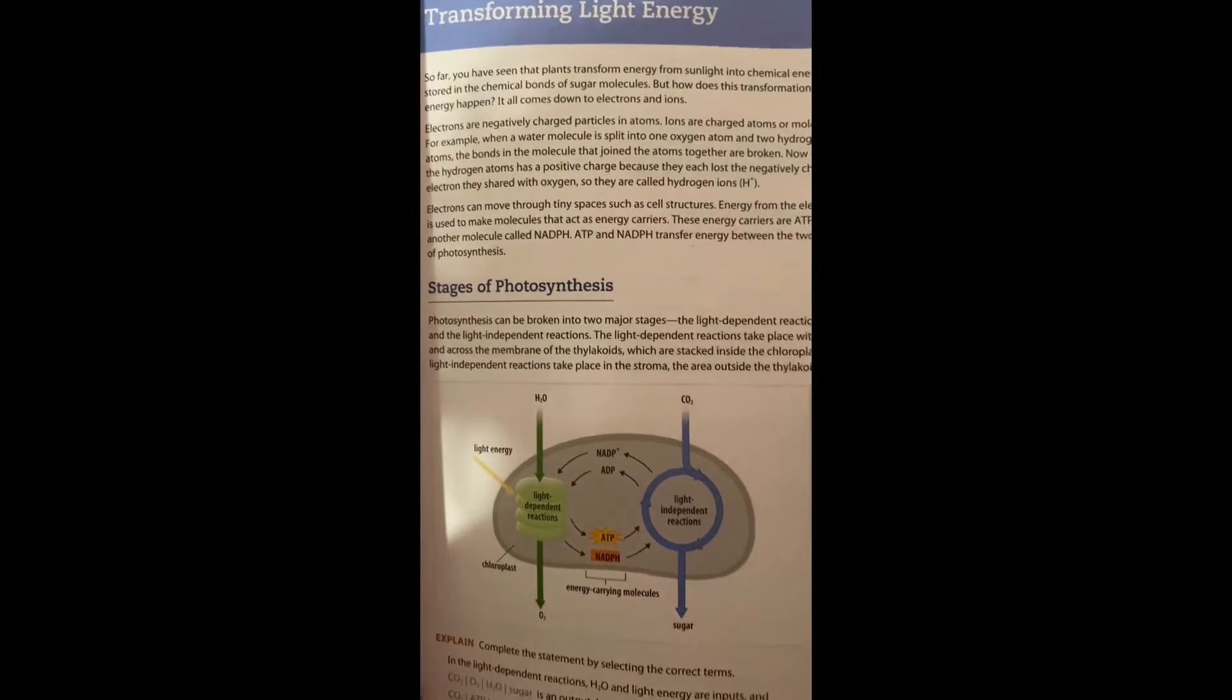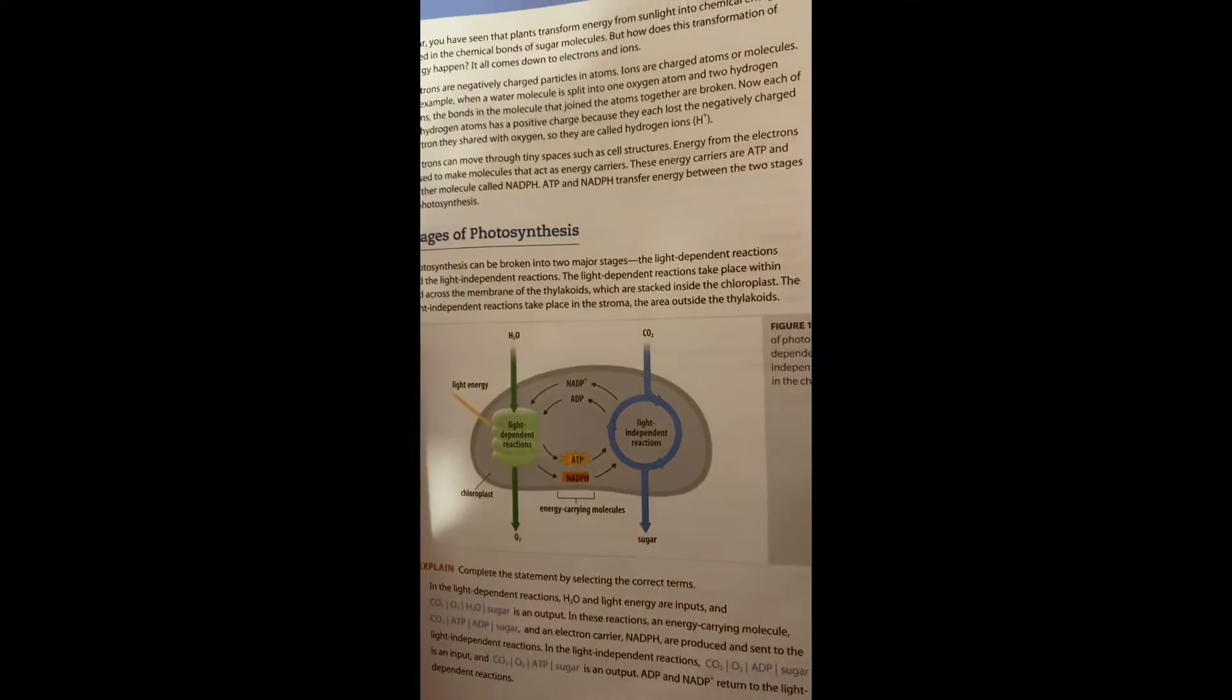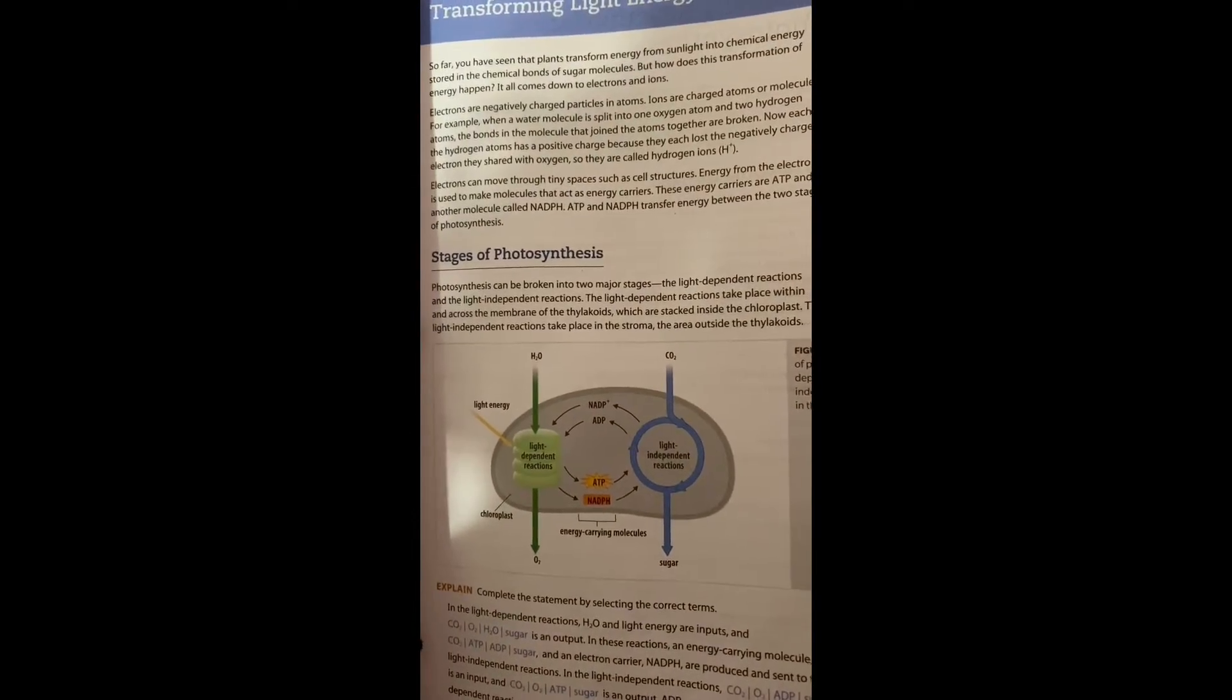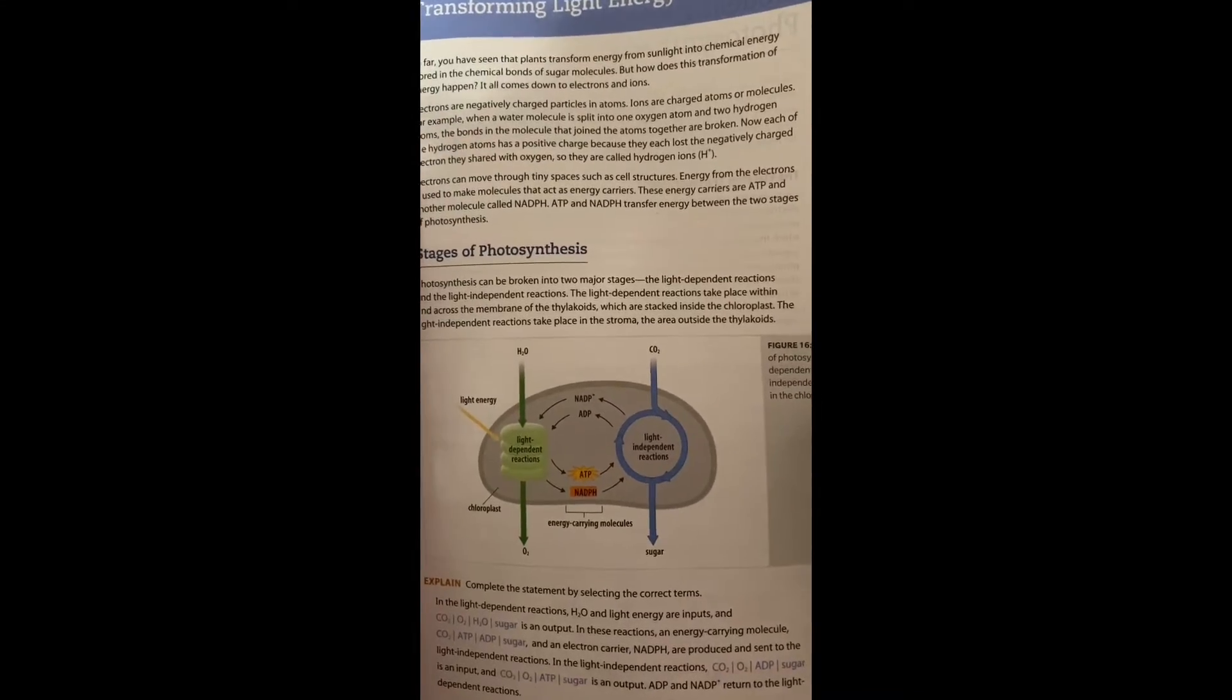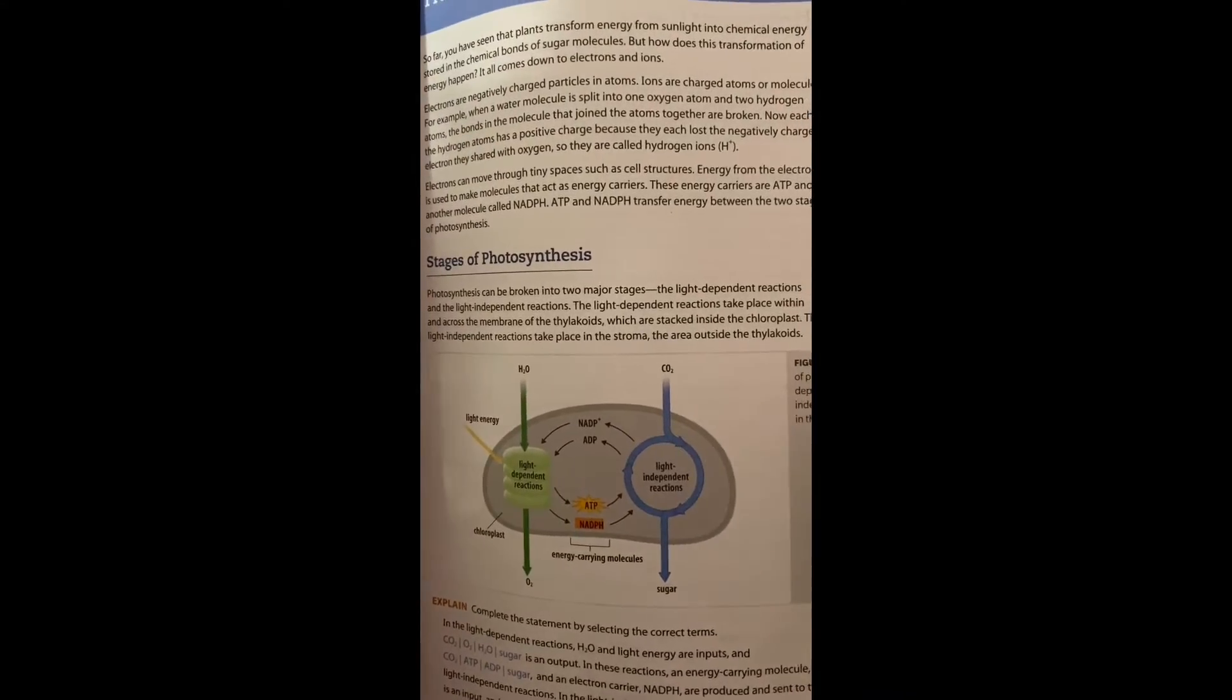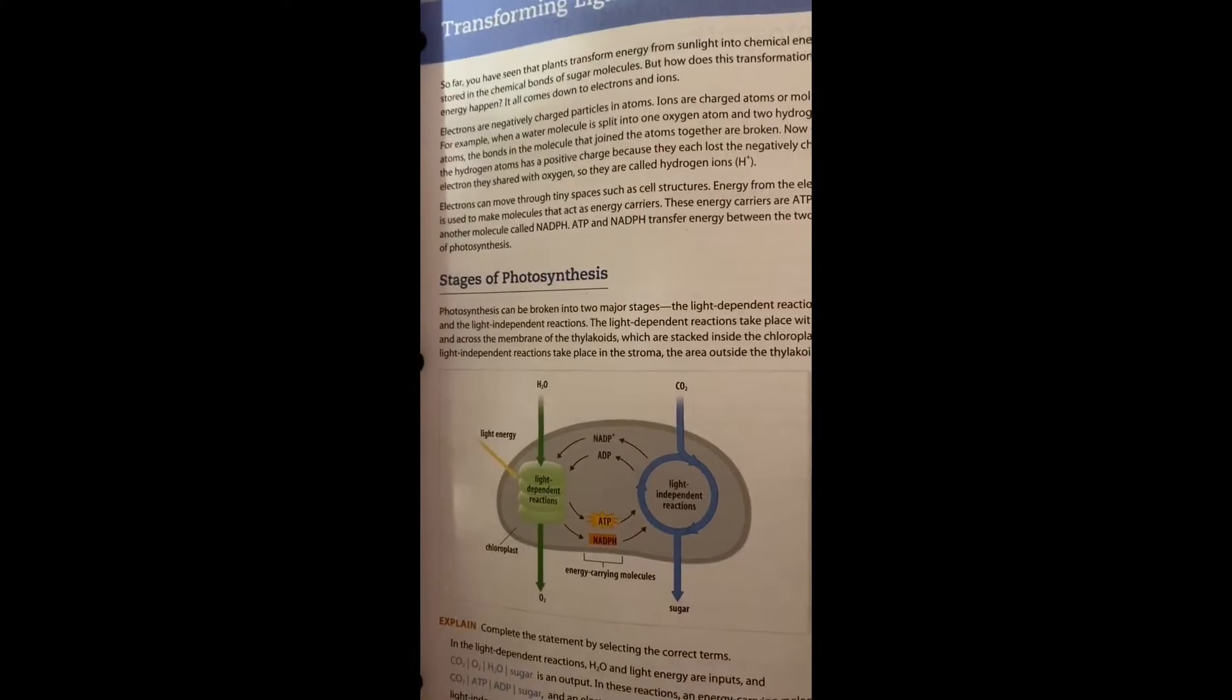Stages of photosynthesis. Two major stages: light dependent and light independent. Light dependent takes place within the membrane of the thylakoids inside chloroplasts. Light independent takes place in the stroma.